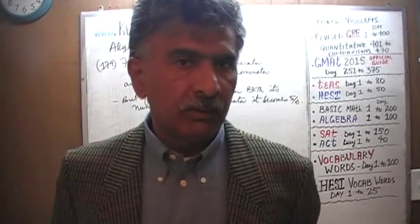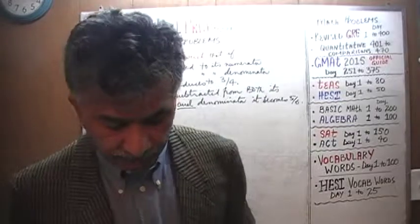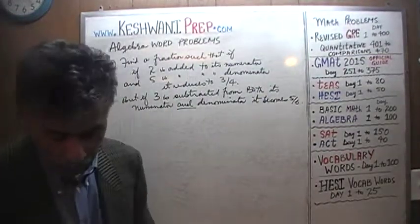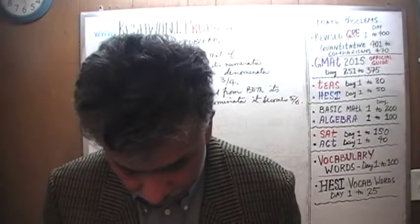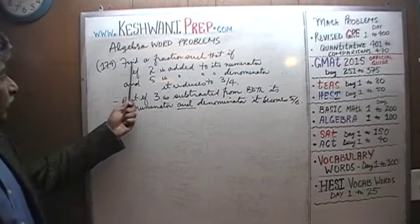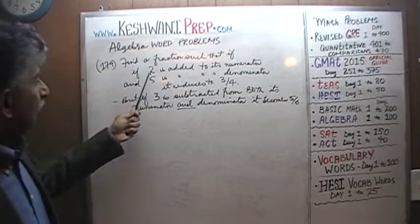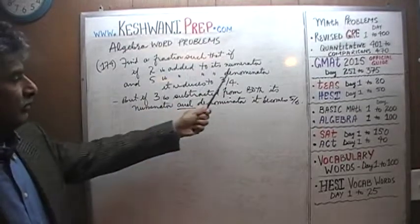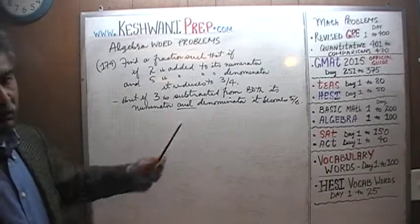Today we will do two problems: problem number 174 and 175. Problem number 174 is already on the blackboard. Let's take a look at it. It says find a fraction such that if 2 is added to its numerator and 5 is added to its denominator, the fraction becomes 3 quarters.